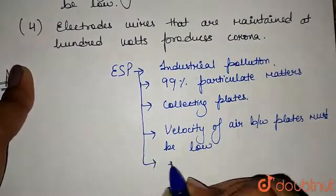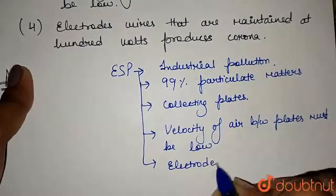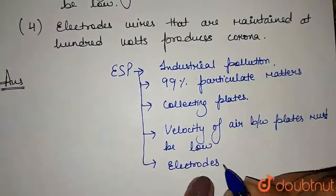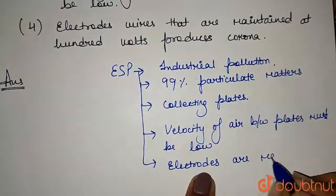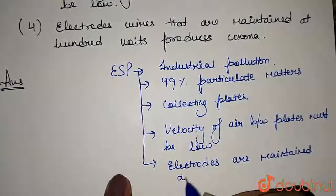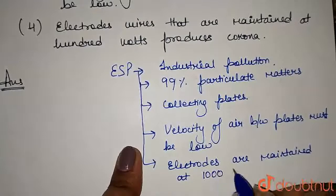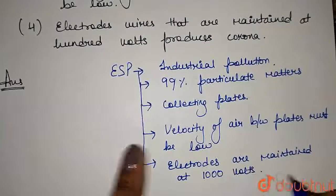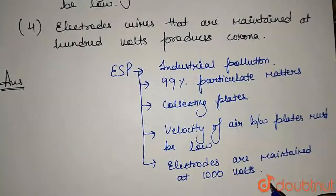The electrodes used in electrostatic precipitators are maintained at several thousand volts — not exactly 1000V, but in reality several thousand volts. Therefore, electrodes are maintained at several thousand volts.